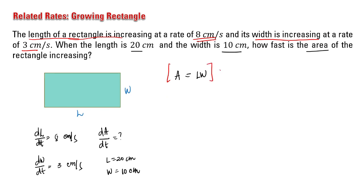The derivative of the area with respect to time equals L times the derivative of width with respect to time, plus width times the derivative of length with respect to time. As you can see here, we performed the product rule.